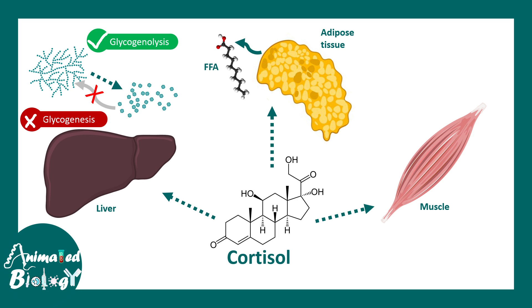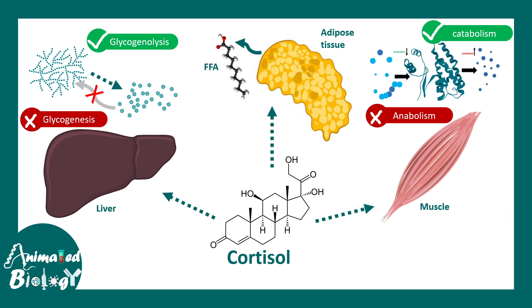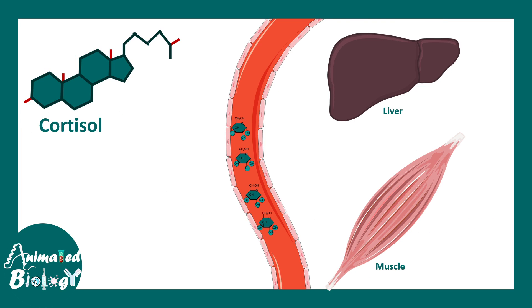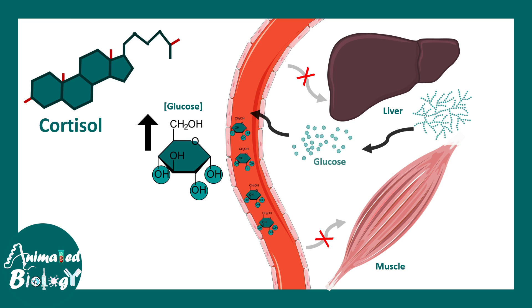In adipose tissue, cortisol breaks down fat into free fatty acids, and in muscle it breaks down protein to free up amino acids. Overall, it ensures that the small molecules required for energy generation under stressful moments are available in the blood — making it a potent regulator of catabolism while preventing anabolism. In the blood, cortisol ensures that glucose levels remain high and cannot be taken up by muscle and liver, because during stress our brain needs more and more glucose.